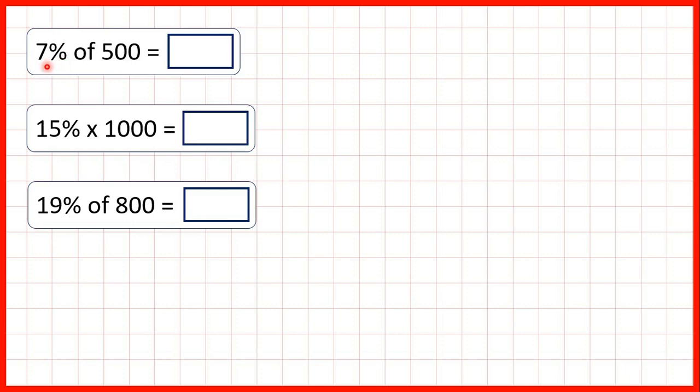So first, we need to find 7% of 500. 7% is the same as seven hundredths, and we can find a fraction of a number by dividing by the denominator and then multiplying that answer by the numerator.